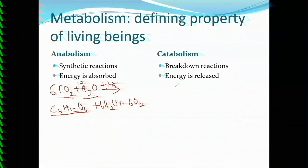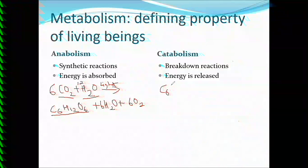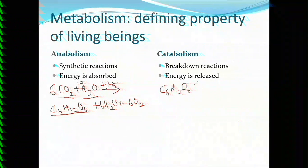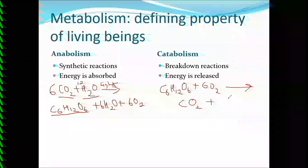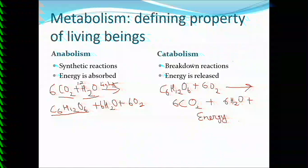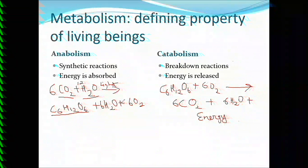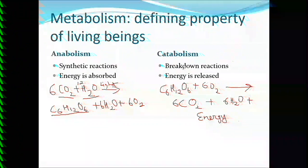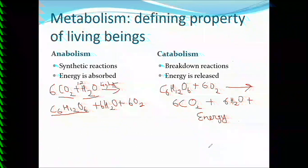Catabolic reactions are reactions in which breakdown occurs. A complex substance like glucose (C₆H₁₂O₆) is oxidized with 6O₂, giving CO₂ and water, and energy is released. This is an example of a catabolic reaction. So to summarize: metabolism is the sum total of all reactions, and there are two types — anabolic reactions, which are synthetic reactions in which energy is required, and catabolic reactions, which involve breakdown and in which energy is released.